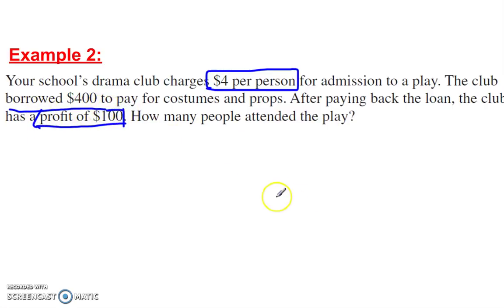That means at the end, after everything they paid and took in, they ended up with $100. So, equals $100. $4 per person. That means we could say, P for person, $4 per person, for every person, four times every person.